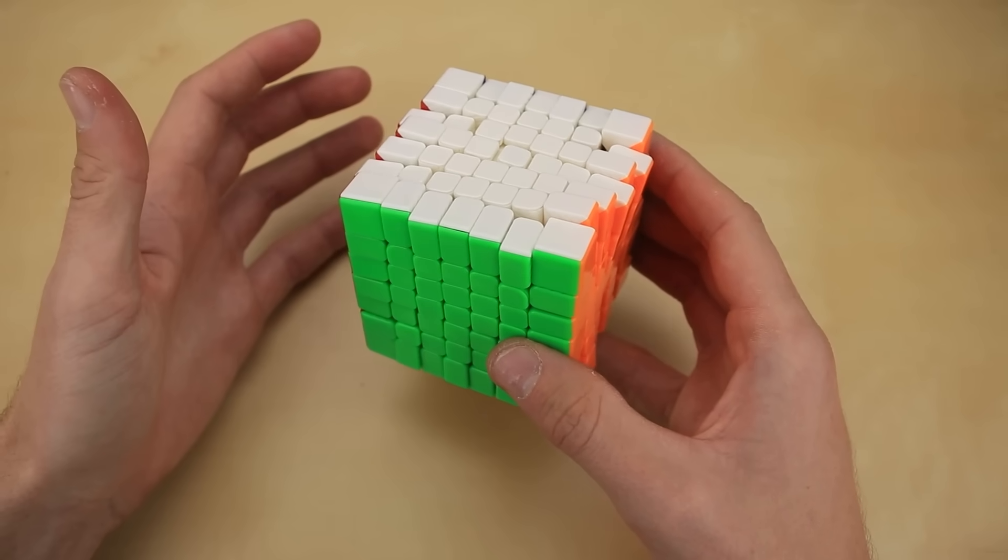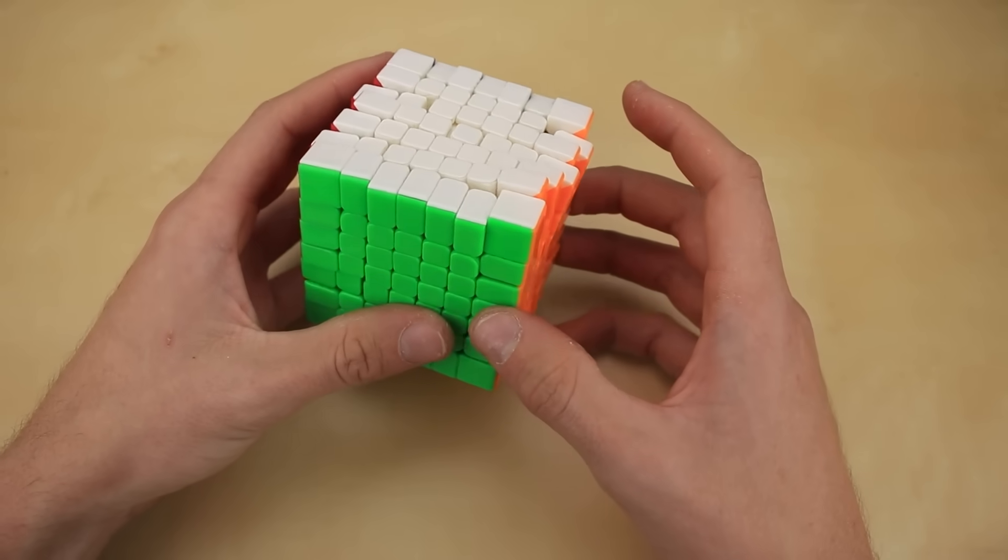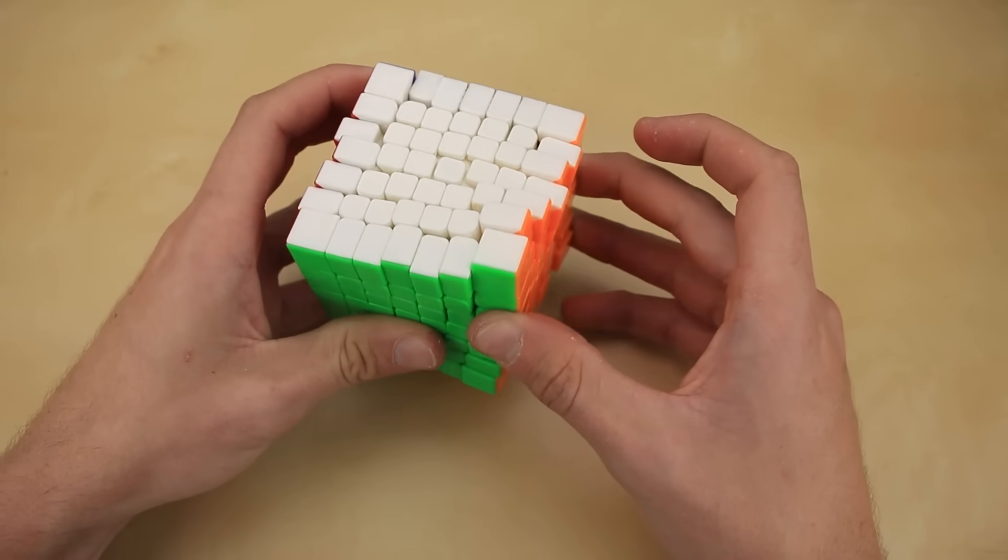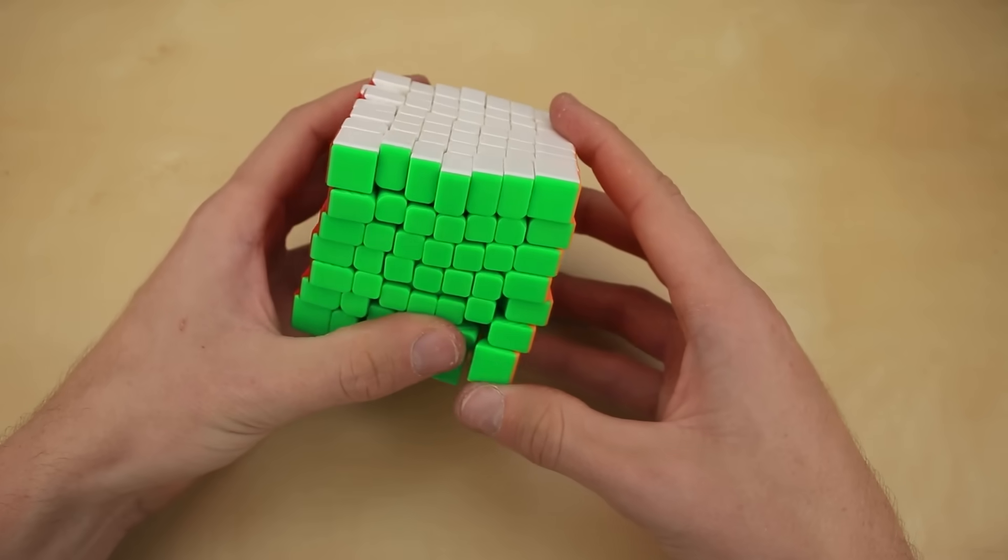I think that little bit of looseness was exactly what we needed, because this thing is already looking so much more terrible. Let's try and turn it. Yeah, the pieces are so spread out now that even the corner cutting can't save it. It is just absolutely awful.